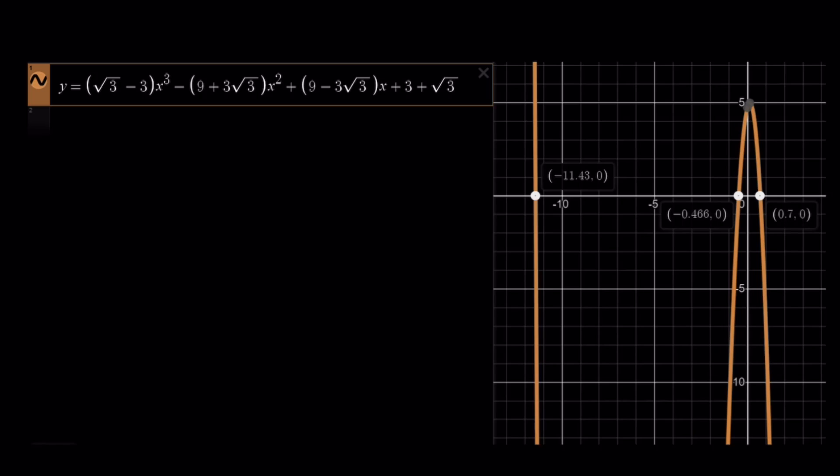Square root of 3 minus 3 times x cubed, minus 9 plus 3 root 3 x squared, plus 9 minus 3 root 3 x, plus 3 plus root 3. A lot of root 3s, obviously, that comes from 30 degrees.